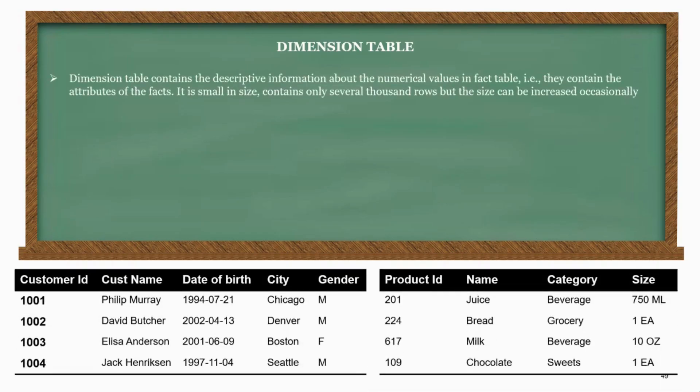Let's first look at dimension tables. Dimension table contains the descriptive information about the numerical values in fact table, that is, they contain the attributes of the facts. It is small in size, contains only several thousand rows, but the size can be increased occasionally.